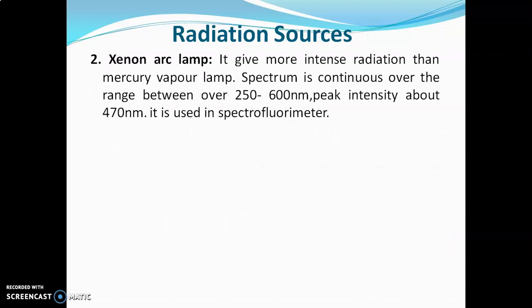The xenon arc gives more intense radiations than the mercury vapor lamp. Its spectrum is continuous over the range of 250 to 600 nanometers, with peak intensity at about 470 nanometers. It is an expensive lamp, generally used in spectrofluorometers. The advantage of this lamp is that it gives a continuous spectrum.